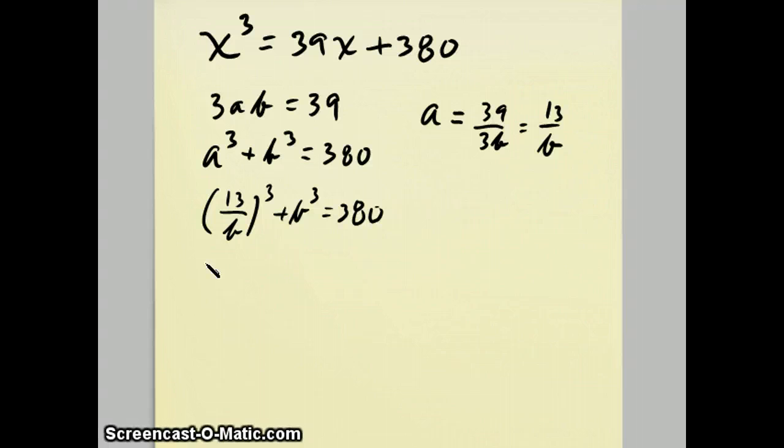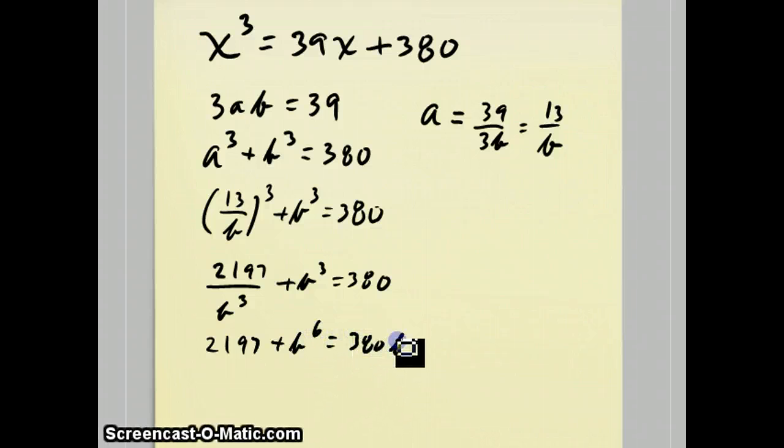This becomes 2,197 over b cubed plus b cubed equals 380. Multiply through by b cubed, get 2,197 plus b to the 6 equals 380b cubed. Move everything over to one side.